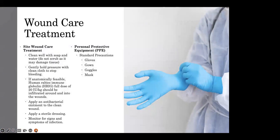Wound care treatment: make sure that you clean well with soap and water. Do not scrub as it may damage the tissue. Gently hold pressure with a clean cloth to stop the bleeding. If anatomically feasible, H-Rig full dose of 20 IUs per kilogram should be infiltrated around and into the wound. Apply an antibacterial ointment to the clean wound, then apply a sterile dressing, and monitor for signs and symptoms of infection. Standard precautions recommended include gowns, gloves, mask, and eye protection. The rabies virus is transmitted through direct contact through broken skin or mucous membranes of the eyes, nose, or mouth with infectious tissues or fluids. Infectious tissue or fluids include tears, nervous tissue, saliva, and respiratory tract fluids. Blood, urine, and feces are not infectious.